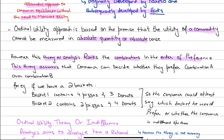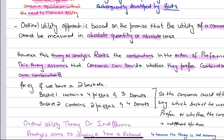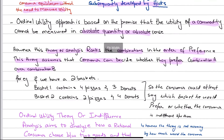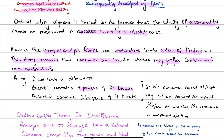This theory assumes that consumers have the power to decide — they cannot measure utility or give it a quantifiable number, but they can decide whether they prefer bundle A over bundle B. For example, if basket one has four pizzas and three donuts, and basket two has two pizzas and four donuts, the consumer can at least say which basket they would prefer.